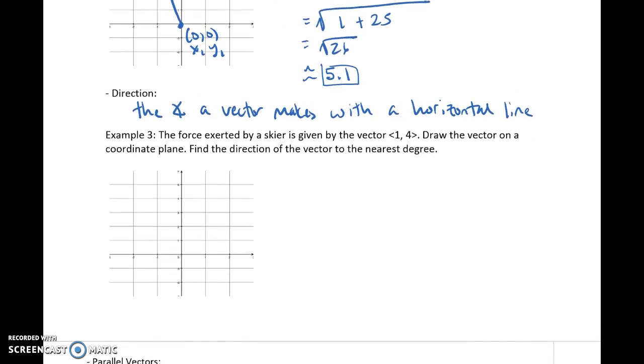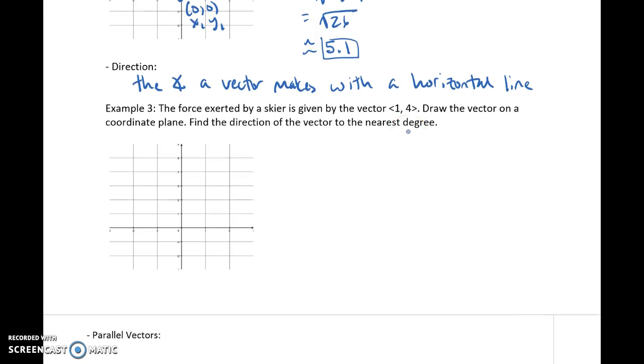And this is where we're going to use our components and trig to find that specific direction. So if you take a look at example 3, we have our vector 1, 4. We're going to draw it and then find the direction to the nearest degree. And again, you pick your initial point. I always love 0, 0 because it's nice and easy and it's usually centered. Then we are going to go ahead and go right 1, up 4. So there's the vector. And the question is, where is the direction? Remember, the direction is basically that angle of elevation. So this is your horizontal line. So this is the direction that I'm looking for. So that's my x.